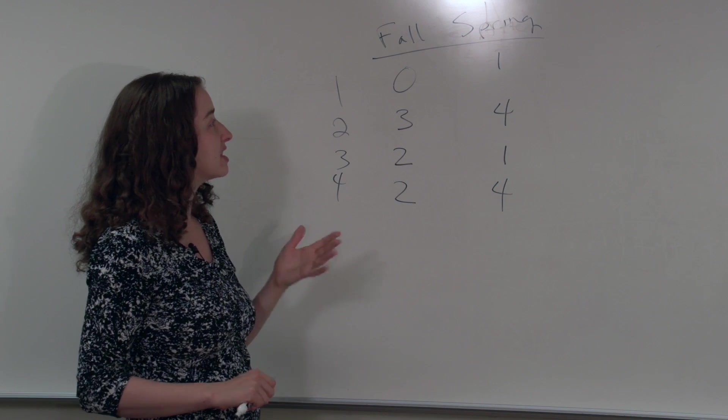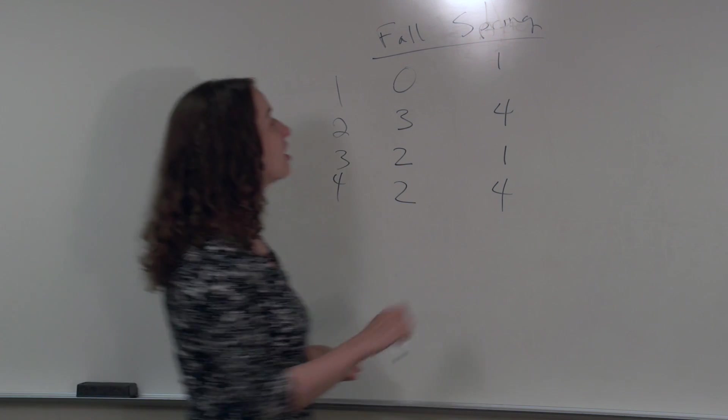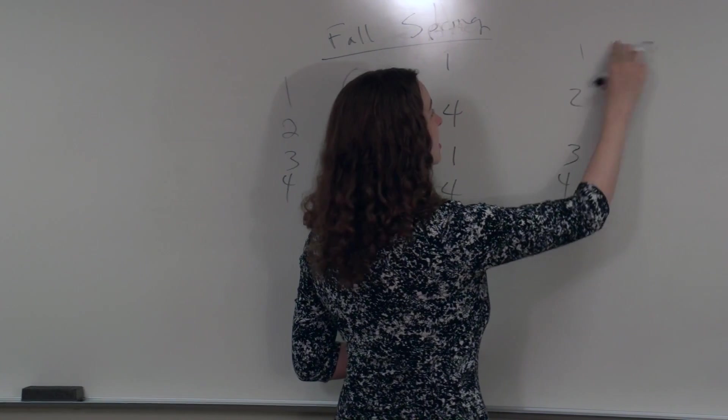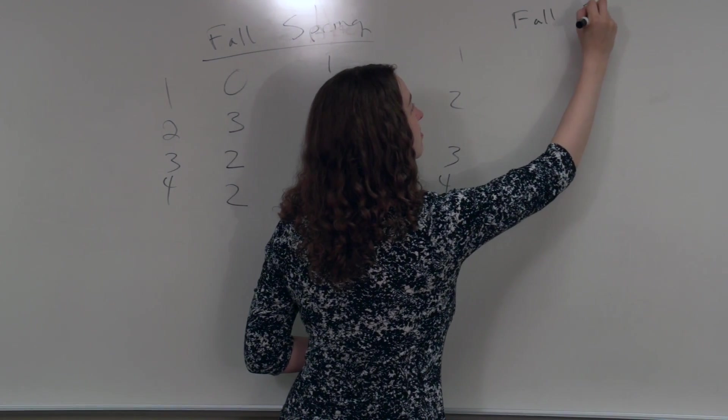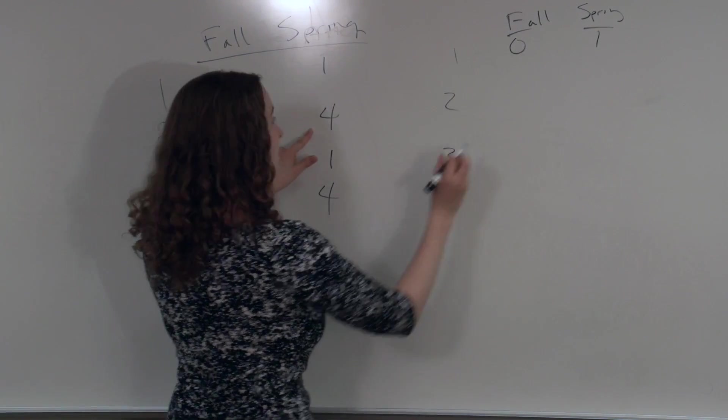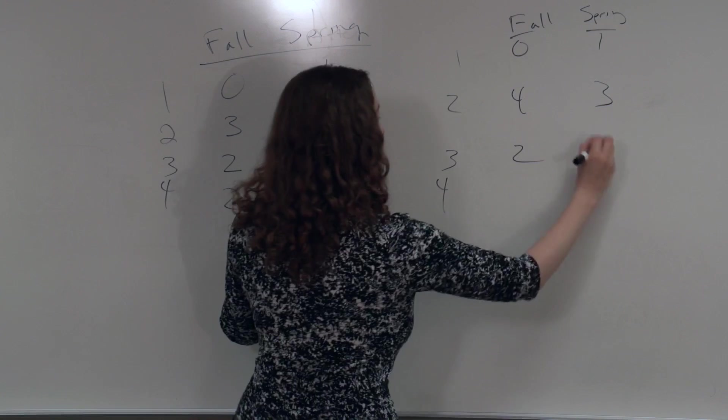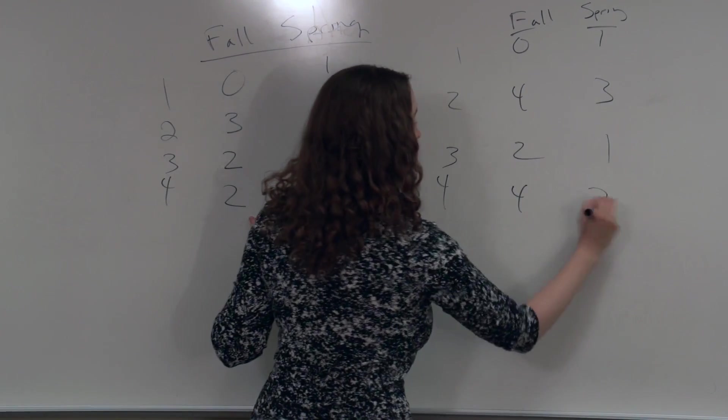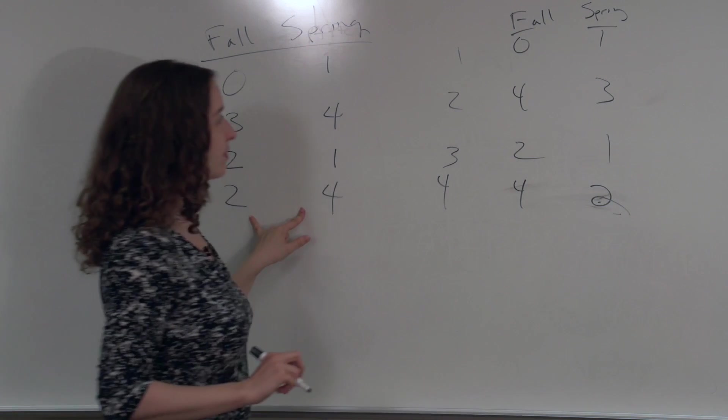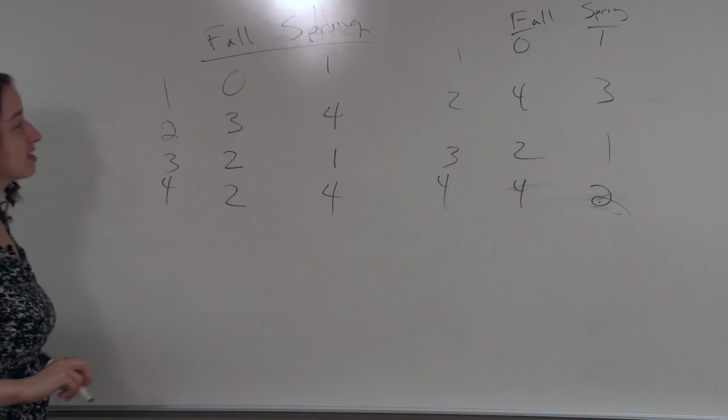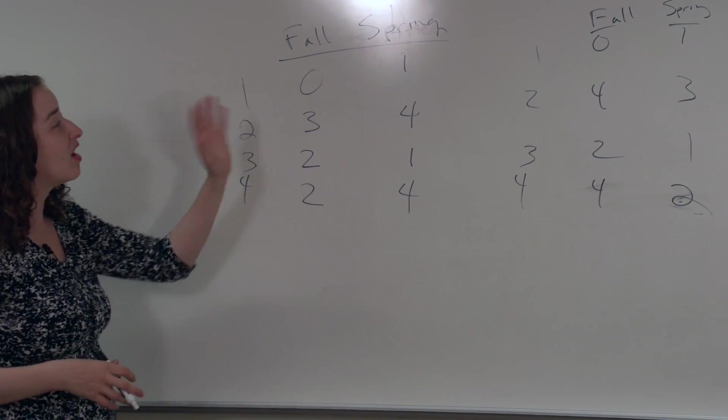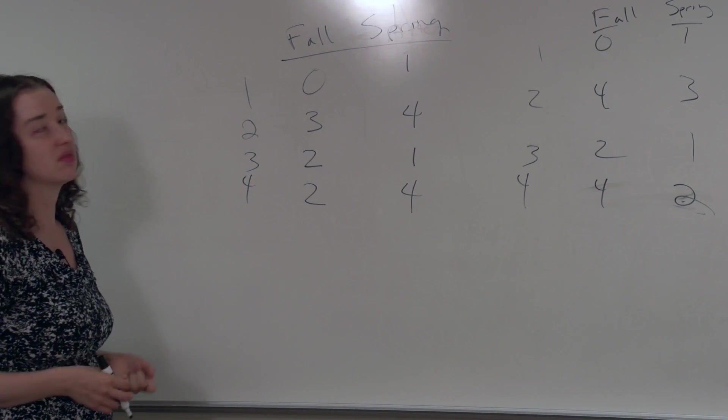But we're going to maintain which student was which. So under the null hypothesis that fall versus spring doesn't matter, another possible data set might have looked like this. Maybe for this student, these two numbers stay the same, but for this next student, we reverse them. And for this student here, the numbers stay the same, and for this next student, we reverse them.